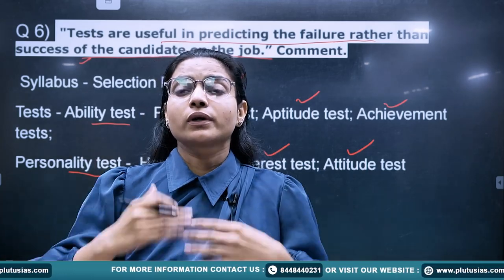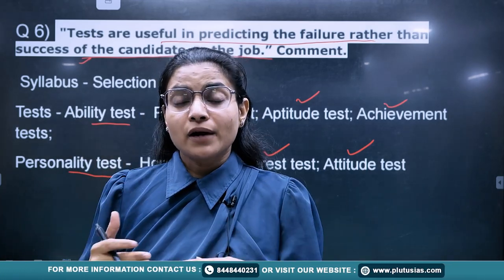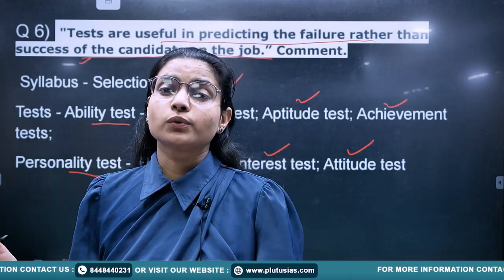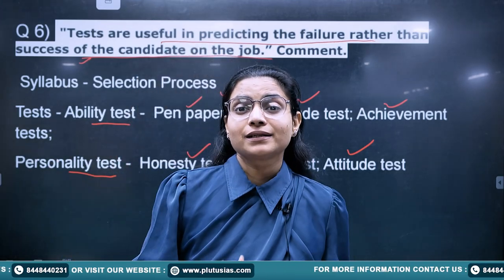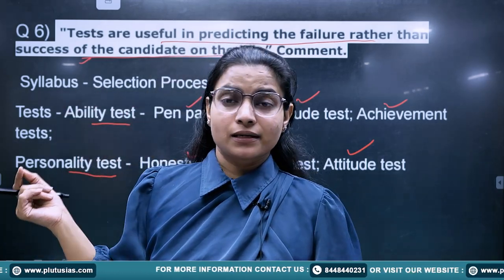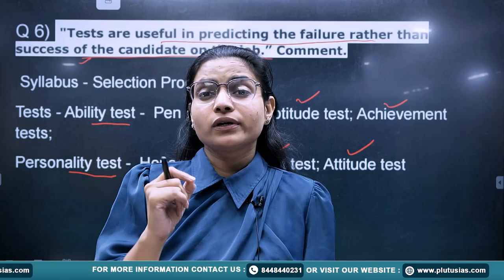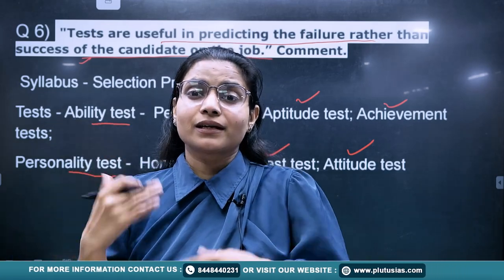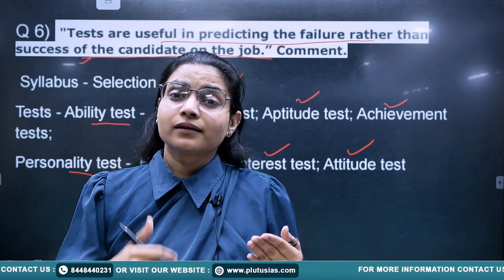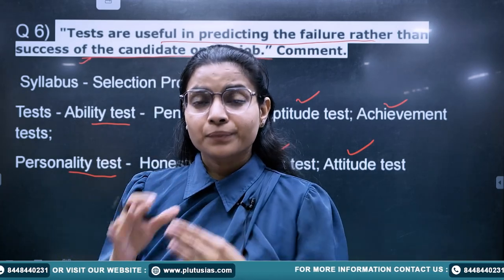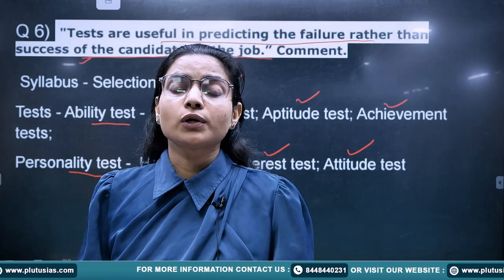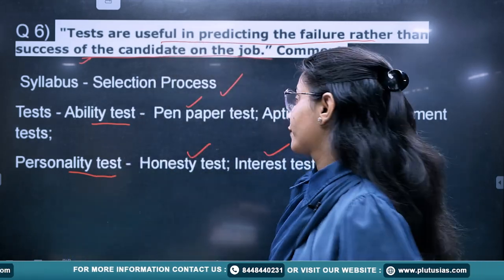In the conclusion, you can write what other things are needed beyond the selection test for a better selection process. In the answer, first justify the statement — selection is acting as elimination — and then write the contradiction: if we use multiple selection tests together, maintain reliability and consistency, we can also measure success. Remember the key point that even a favorable candidate may not perform in the future.